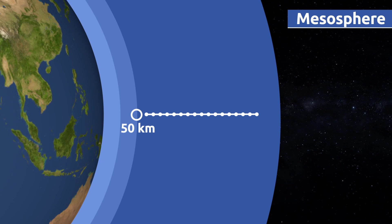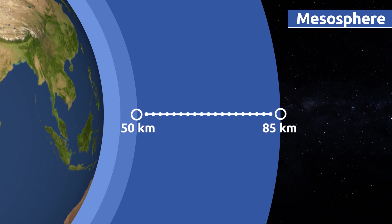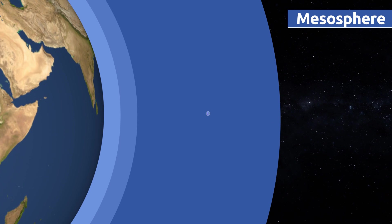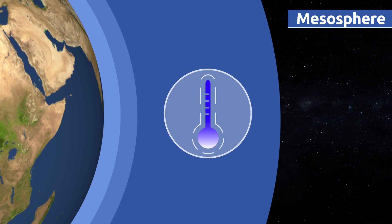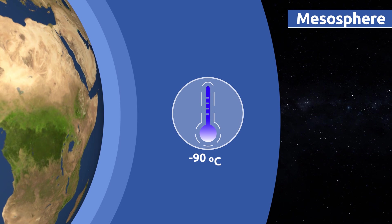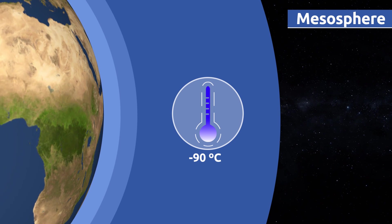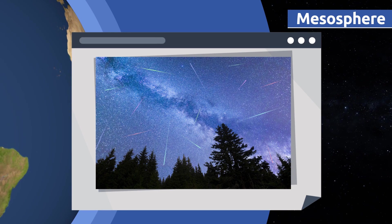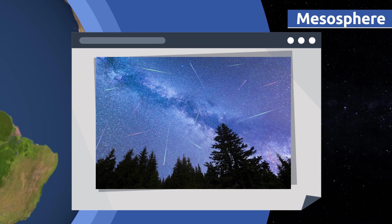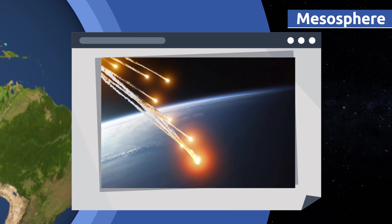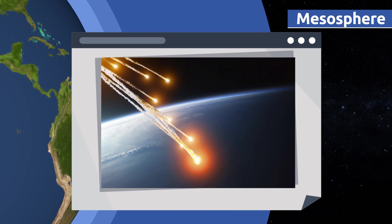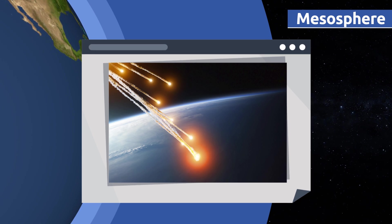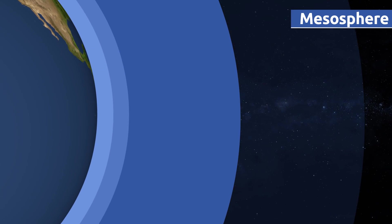The mesosphere extends to an altitude of 50 to 85 kilometers above sea level. It is the coldest layer of the atmosphere — temperatures can drop down to 90 degrees Celsius below zero. Shooting stars occur in the mesosphere. These are meteors that travel through space, and as soon as they hit the mesosphere they start burning up, leaving a tail behind them.